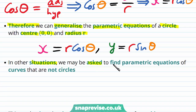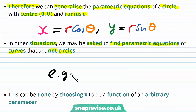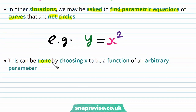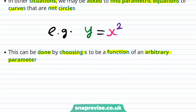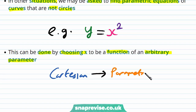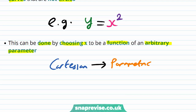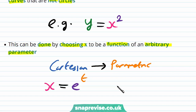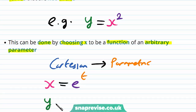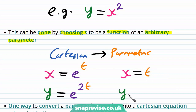In other situations we may be asked to find parametric equations of curves that are not circles. For example, we can be asked to find parametric equations for the curve y is equal to x squared. This can be done by choosing x to be a function of an arbitrary parameter — converting from a Cartesian equation to a set of parametric equations. We could let x equal e to the power of t, giving y equal to e to the power of 2t, or simply let x equal t so that y equals t squared.